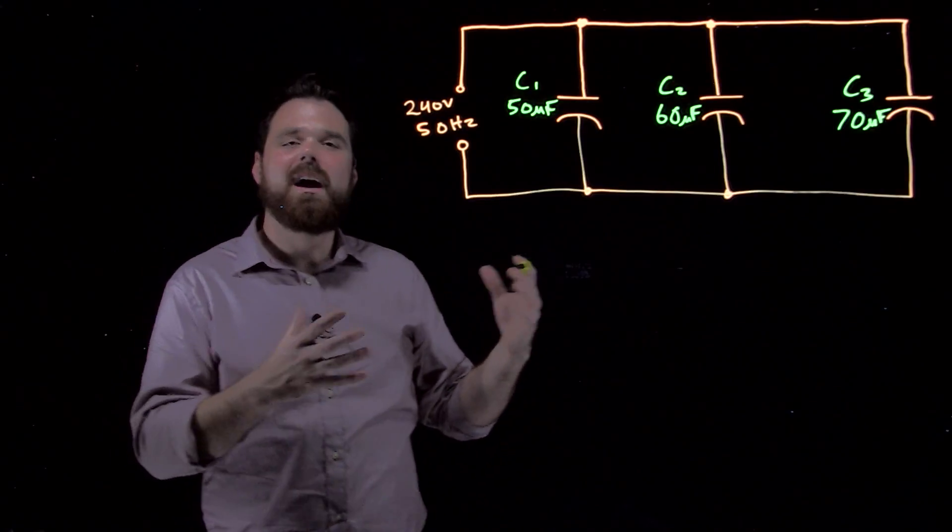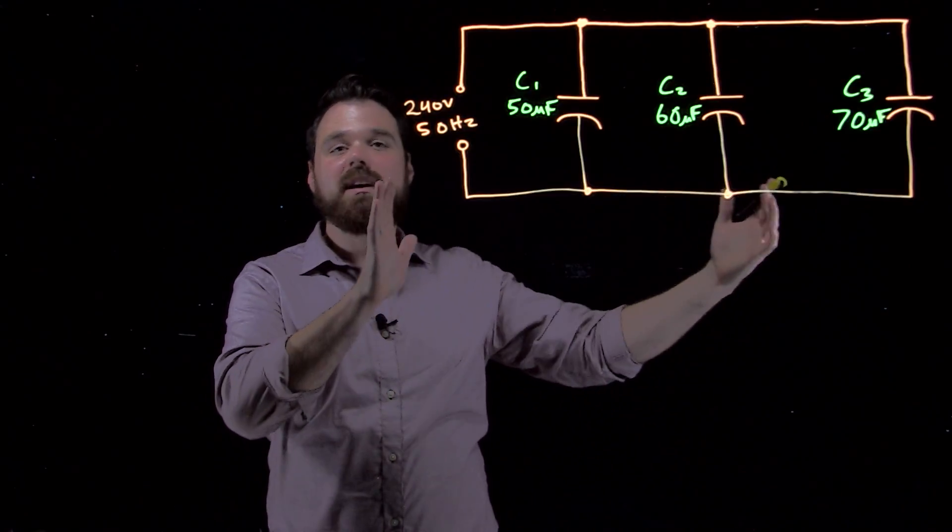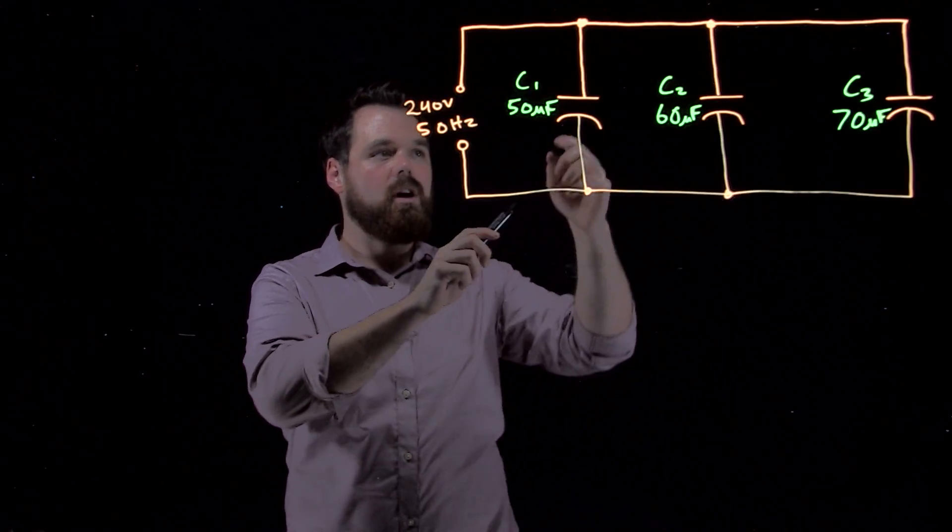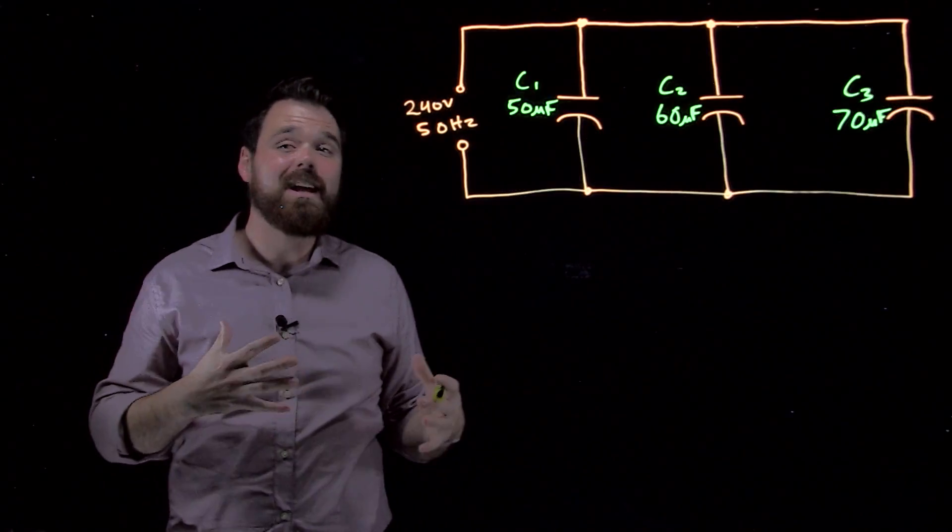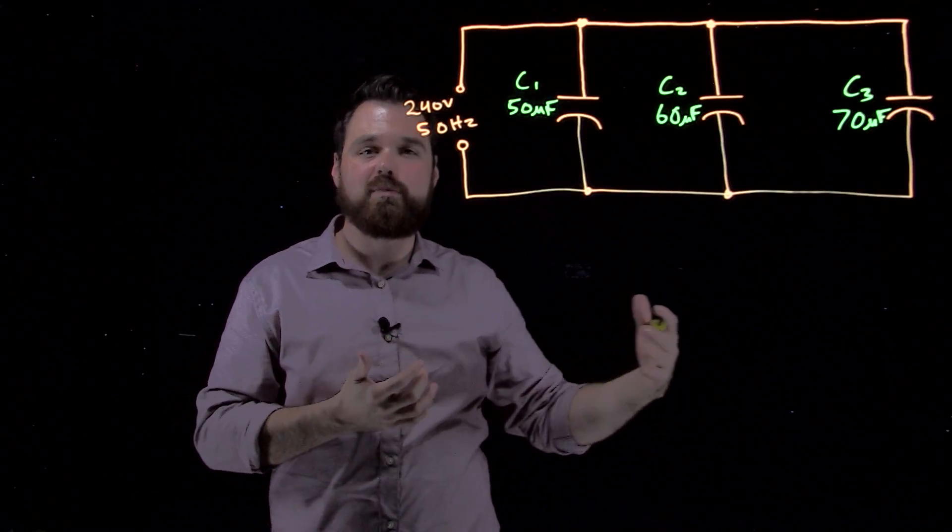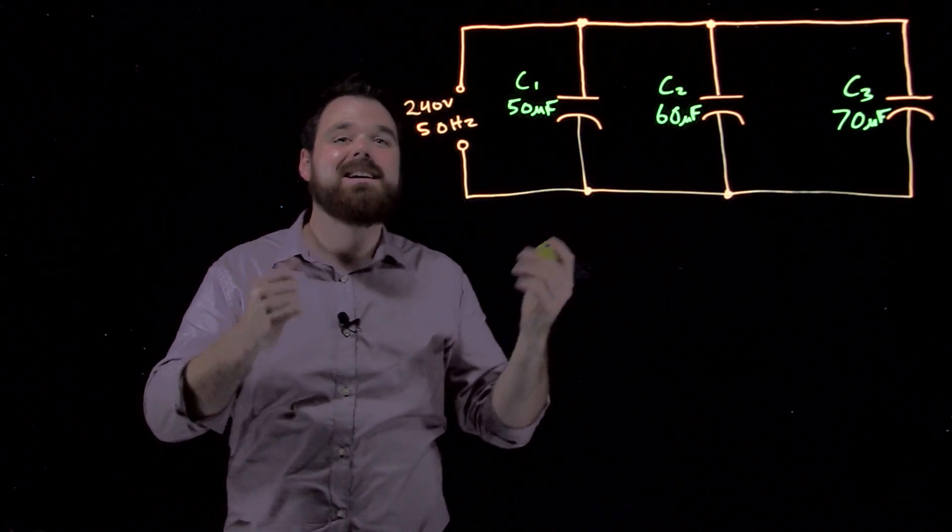What we see happening in parallel is almost the area of the plates increasing. We've got all of our one set of plates and our other set of plates. So we actually see capacitance add up directly in parallel. Add more capacitors in parallel, our capacitance increases.